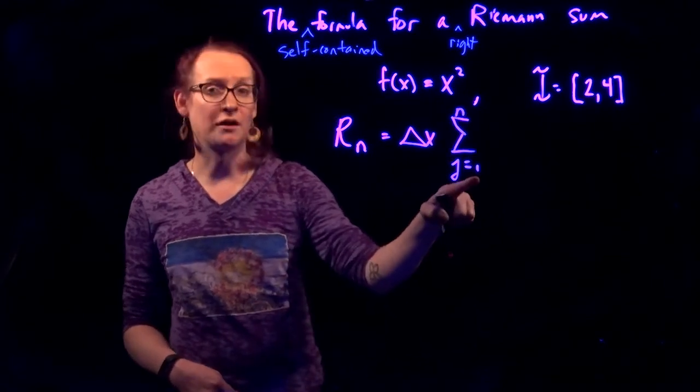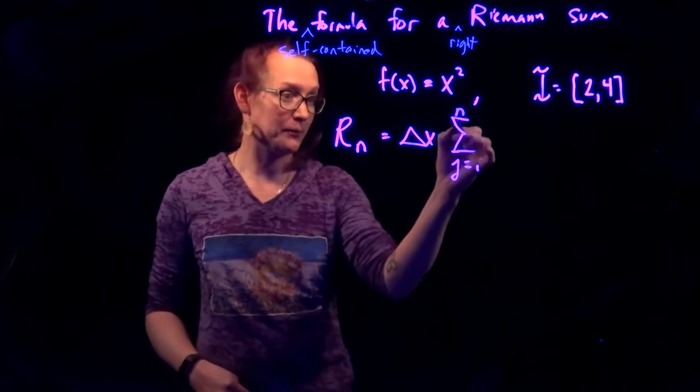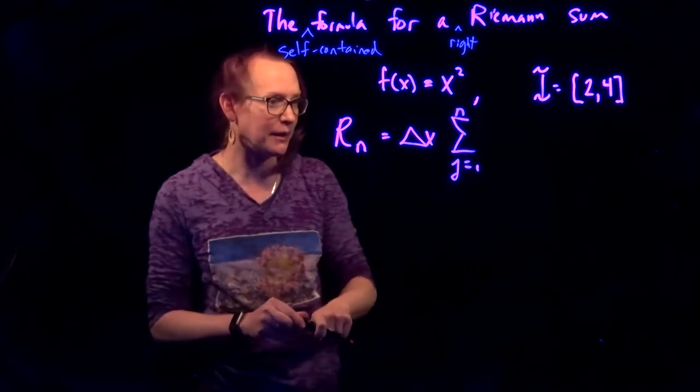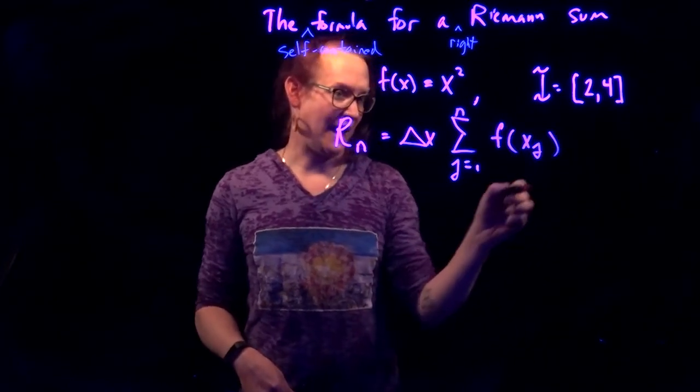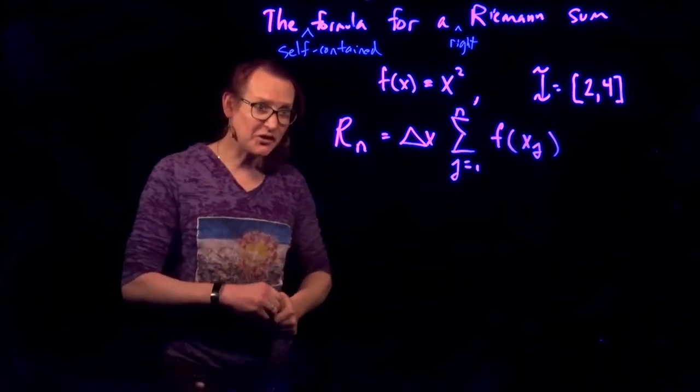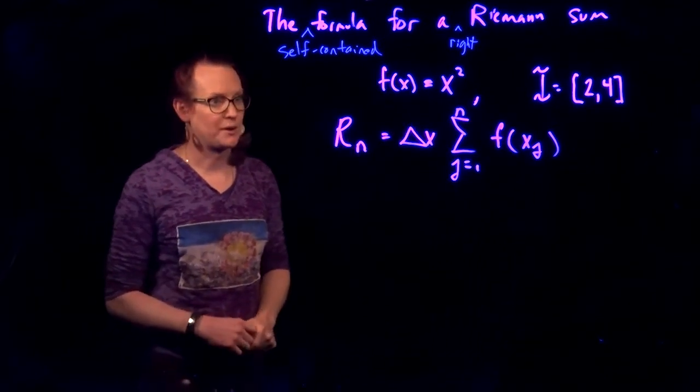It starts at 1 because we're omitting the left endpoint, and we're going to n because we're including the right endpoint. See one of my other videos if that didn't make sense, of f of x sub j.